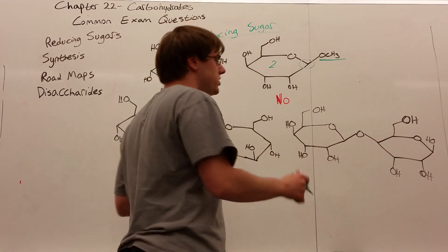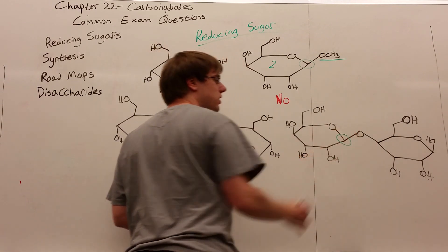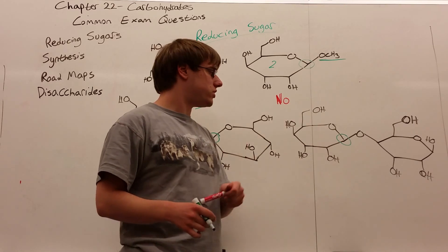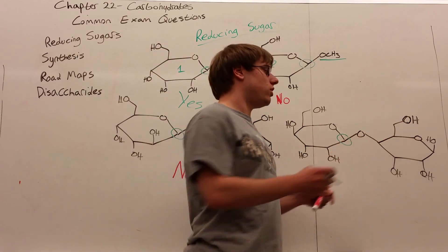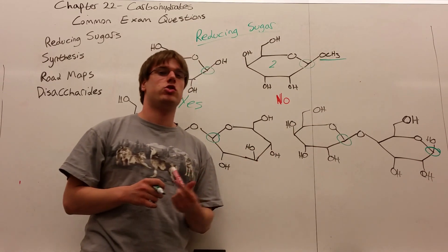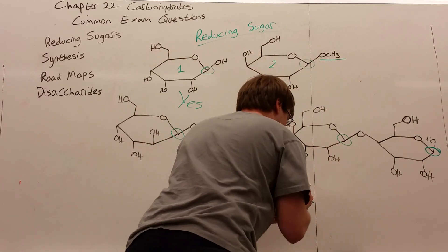Finally, I look at this disaccharide and I say, okay, here's my first anomeric, and this does not have its OH, so this sugar isn't reducing. But look at this one. This one has its anomeric OH. So do you consider that a reducing sugar? Yes, you do.